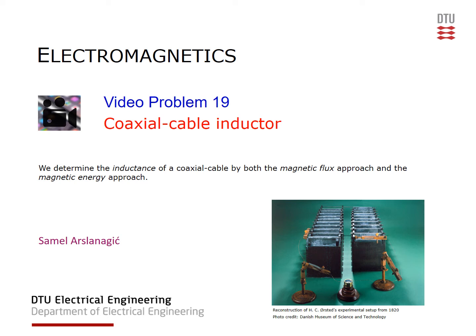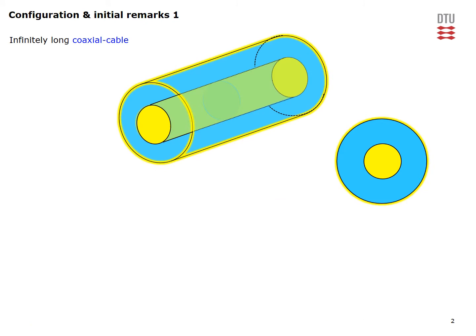This is video problem 19. We consider a coaxial cable and we would like to determine its inductance by both the magnetic flux approach and the magnetic energy approach. The configuration consists of two concentric circular conductors, assumed infinitely long. The inner conductor has a radius A and carries a uniform current I as shown on the figure.